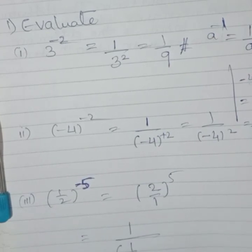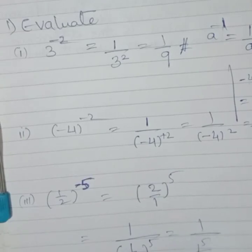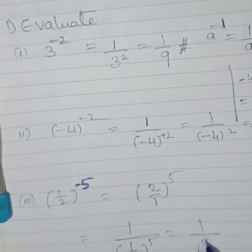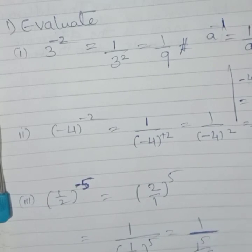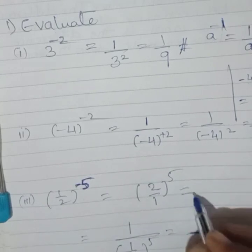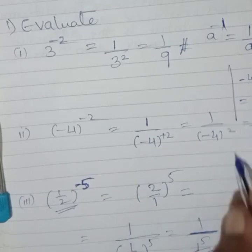What happens here? It is 1 upon 2 raised to 5. So, what we will do here? 1 upon 1 raised to 5 upon 2 raised to 5. Division becomes multiplication. This is 2 raised to 5 upon 1 raised to 5. So, this is what you can write directly if we have fractions like this one.